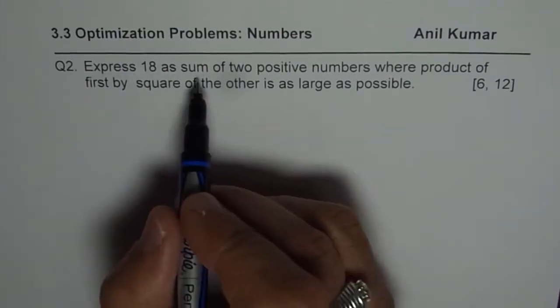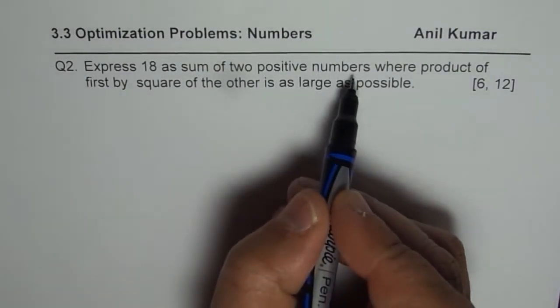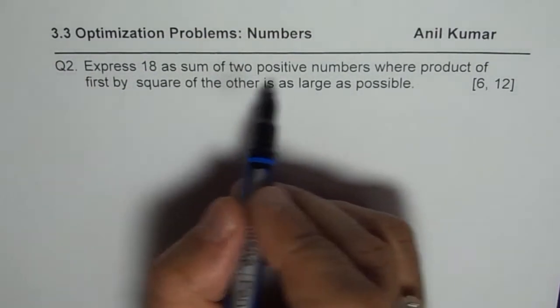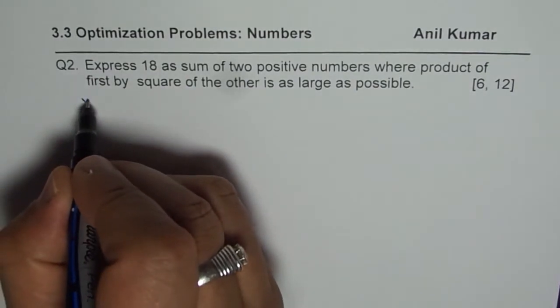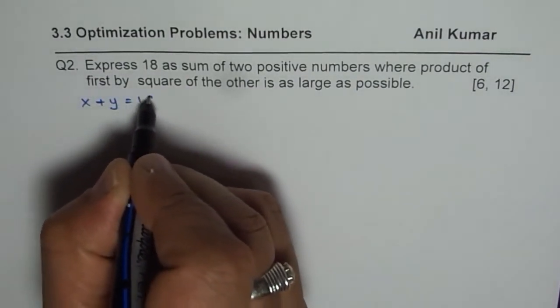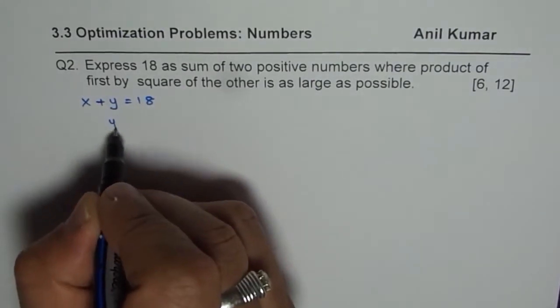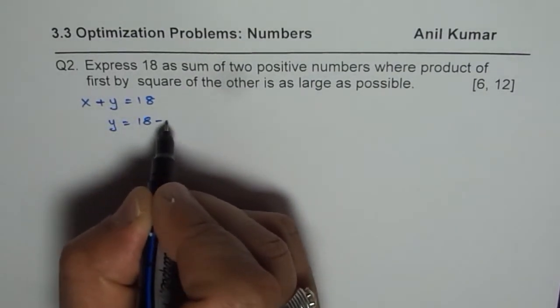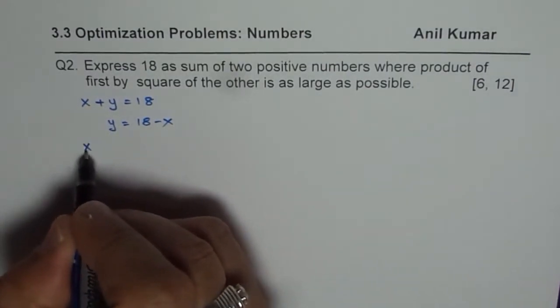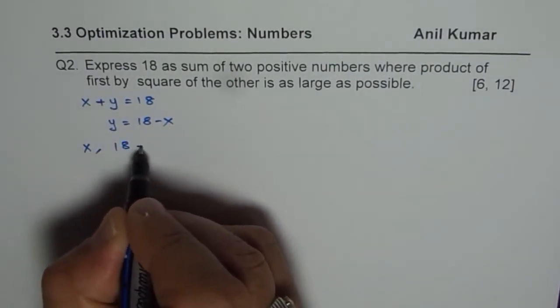So we are looking for sum of 2 positive numbers. You can say let the 2 numbers be x and y. So x plus y equals 18 and then y equals 18 minus x. That way you effectively get that the 2 numbers are x and 18 minus x.